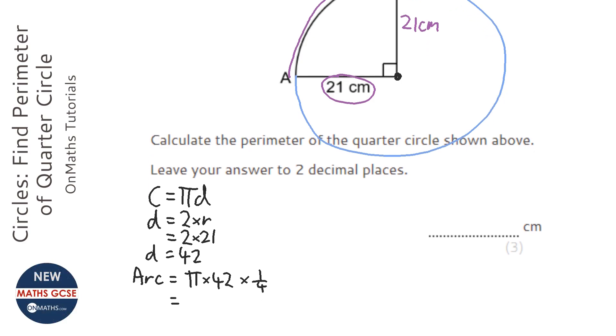So, on my calculator, I'm going to type in pi times 42, and something else you can do is you can press equals and just divide it by 4, and that means the same thing as times it by a quarter. So, 32.9867 and so on.